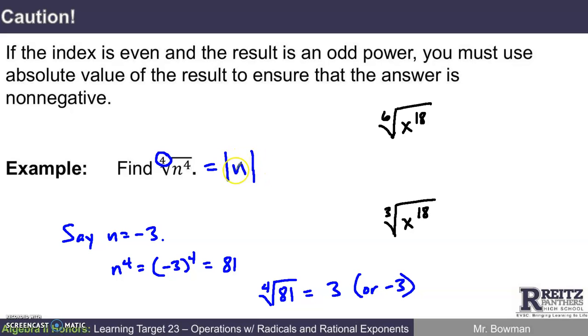Like, I don't know if n is really 3 or negative 3. I'm going to write absolute value of n so that I don't get caught with the wrong sign.